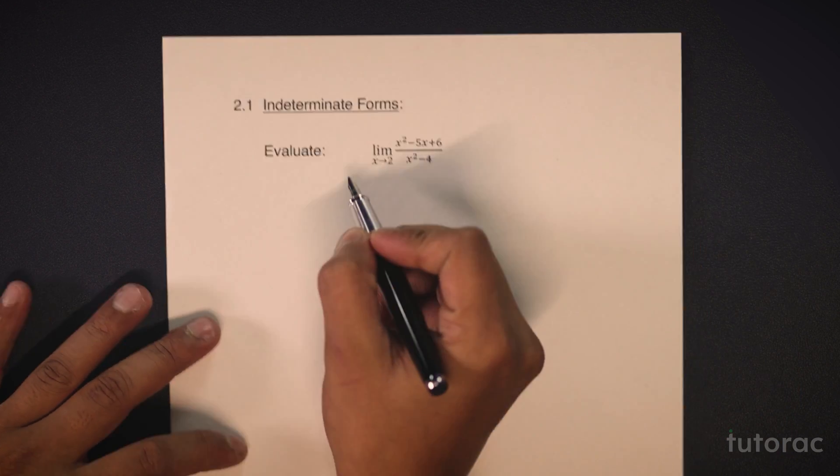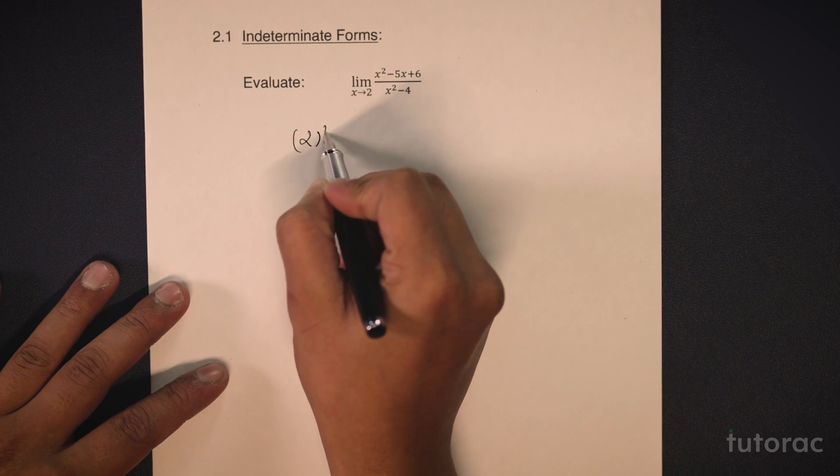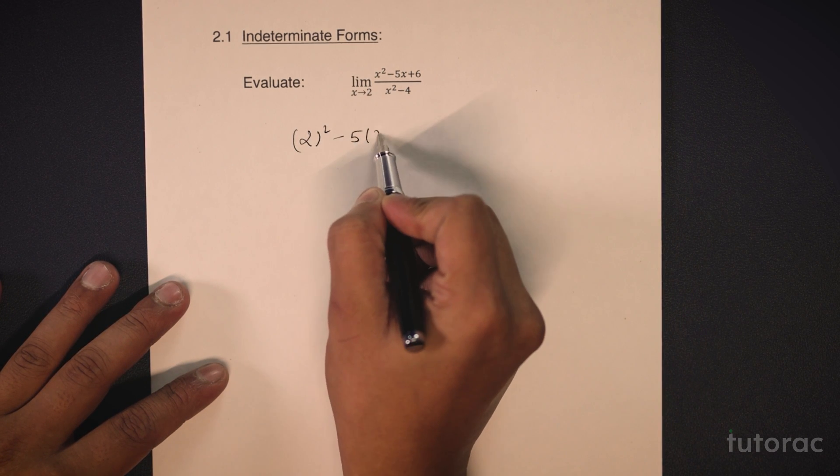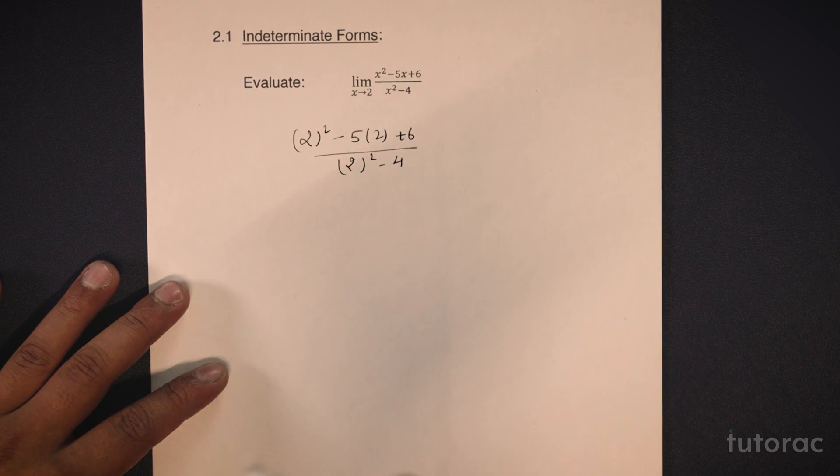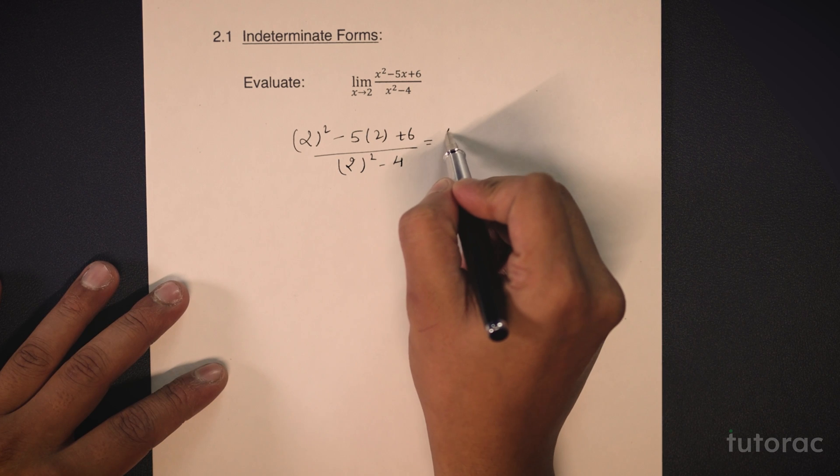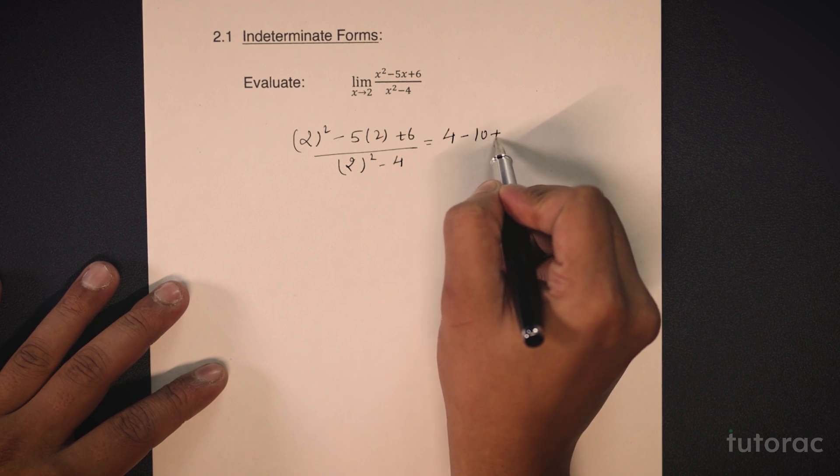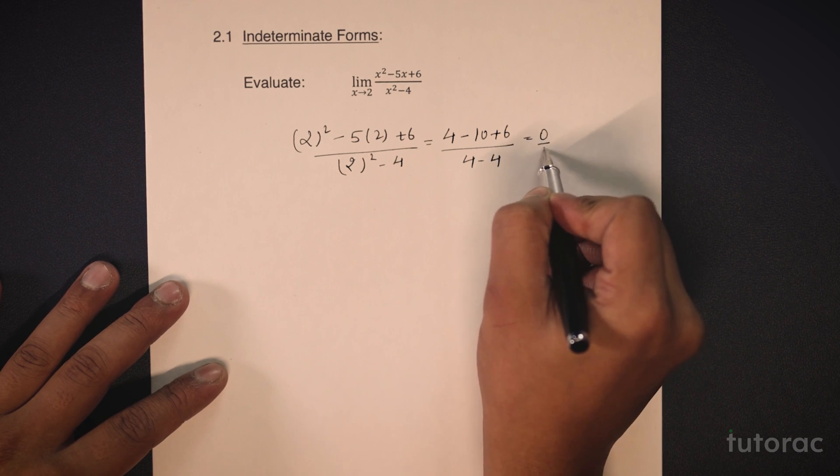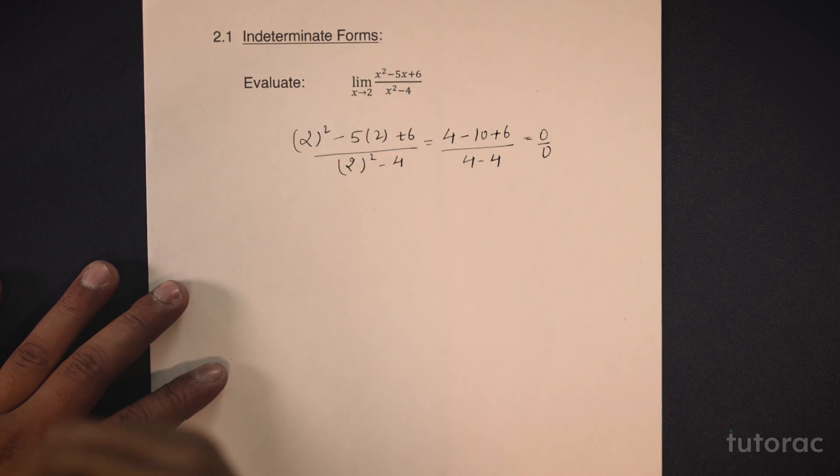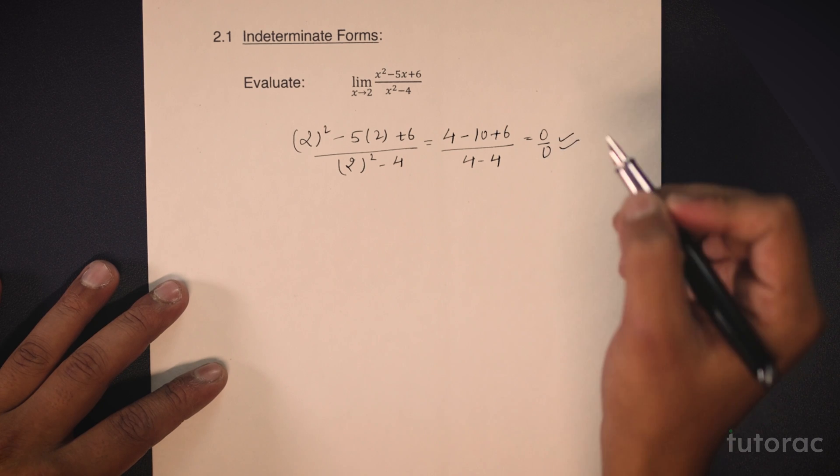If I try to put the value of x as 2, then I will get 2 square minus 5 into 2 plus 6 upon 2 square minus 4 which would give me 4 minus 10 plus 6 upon 4 minus 4 which would be equal to 0 by 0. As you can see here that this is an indeterminate form.